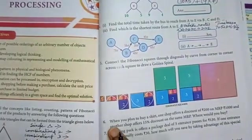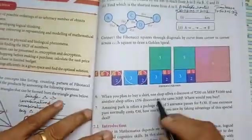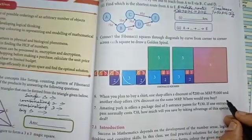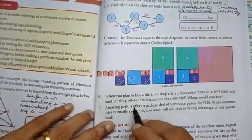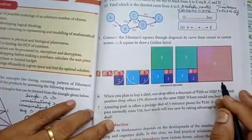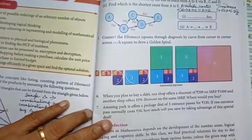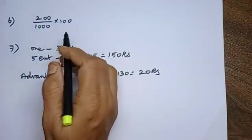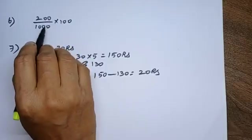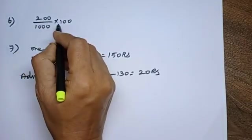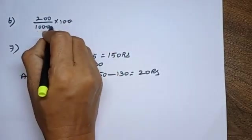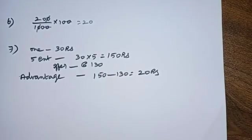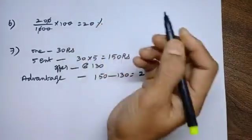Next, 6 to 1. When you plan to buy a shirt, one shop offers a discount of rupees 200 on MRP means maximum retail price, rupees 1000. And another shop offers 15% discount on the same MRP, that is 1000. Where would you buy? For that, you find percentage of discount. Here, first one, 200 rupees on 1000. So, 200 into 100. Then, two zeros, two zeros cut. Here, 0, 0. Equal to 20.